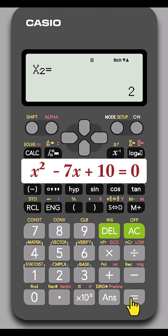Press equals again. It shows x2 equals 2, meaning x minus 2 is also a factor.